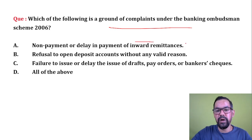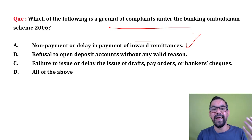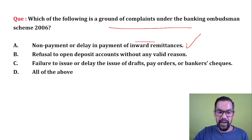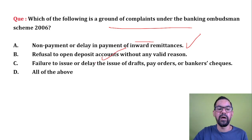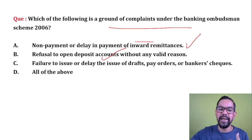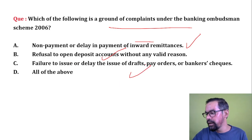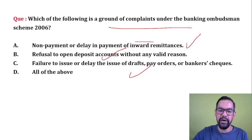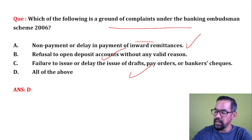Next question: Which of the following is a ground of complaint under Banking Ombudsman? Non-payment or delay of payment of inward remittances — if a bank is not paying your FD amount on time, you can file a complaint. Refusal to open an account — correct. Failure to issue or delay in issue of drafts or banker's cheques — also a valid ground. All of the above — option D — is the correct answer.